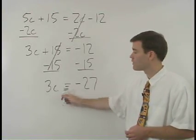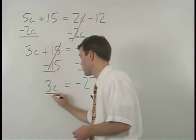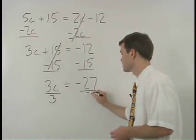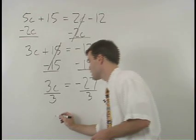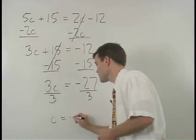To get c by itself just divide both sides by 3 and c equals negative 9.